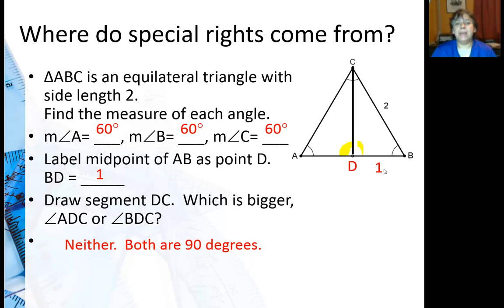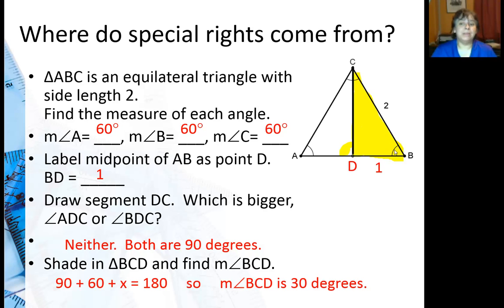So basically we have a 30-60-90 triangle where one side is 1, the leg is 1 and the hypotenuse is 2. But let's go ahead and find this missing leg, the thing that becomes the altitude. Alright so let me shade in, there's my new triangle. And the other thing is I need to make a note that is 30 degrees.